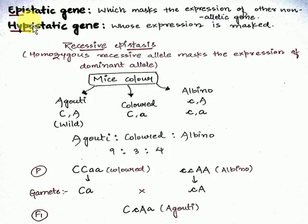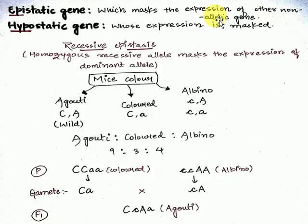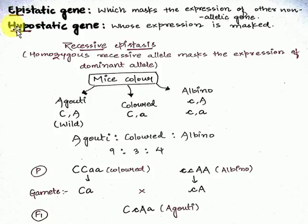First we have to understand the definition of epistasis and hypostasis. Epistasis is a phenomenon. The epistatic gene is the gene which masks the expression of other non-allelic genes. We know that two non-allelic genes are present in a pair in the case of gene interaction, and one allele hides or masks the expression of the other non-allelic gene.